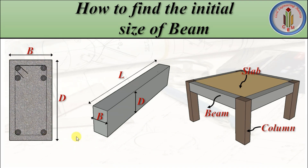Let's see the basic dimensions of the beam. This is the cross section and this is the longitudinal section — we have the width of the beam, the depth of the beam, and the length of the beam. The length will always be the distance between supports.